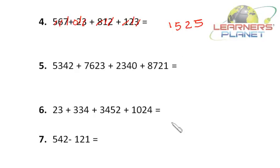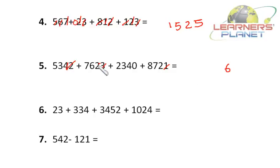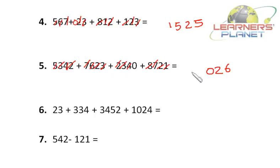Next problem: 5342 plus 7623 plus 2340 plus 8721. Let's begin: 2 plus 3 is 5, plus 1 is 6. Then 4 plus 2 is 6, plus 4 is 10, plus 2 is 12 — write 2, carry 1. Then 1 plus 7 is 8, plus 3 is 11, plus 6 is 17, plus 3 is 20 — write 0, carry 2. Then 2 plus 8 is 10, plus 2 is 12, plus 7 is 19, plus 5 is 24. So the answer is 24,026. Very fast, very interesting, and simultaneously very easy.